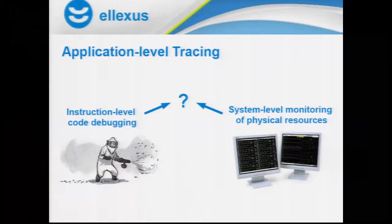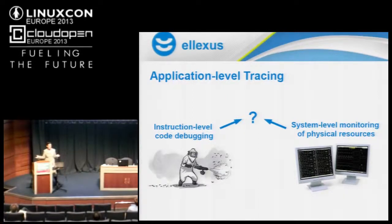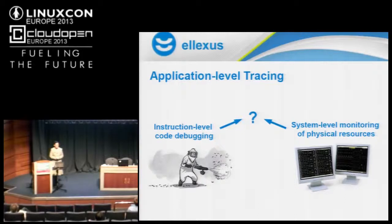So, what do I mean by application-level tracing or debugging? Essentially, we have a multitude of instruction-level or code-level debugging tools, and we have a multitude of system-level monitoring tools that monitor physical resources such as the network and the file system. But what I'm going to talk about is marrying the two — looking at applications as multi-programme entities, potentially multi-machine entities.